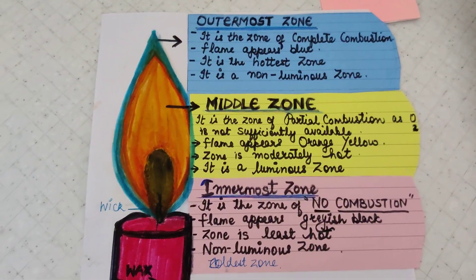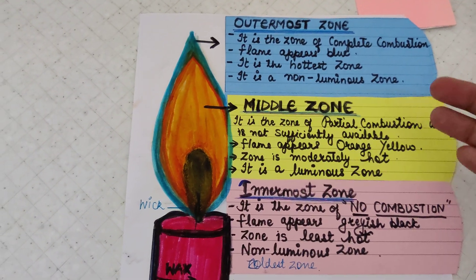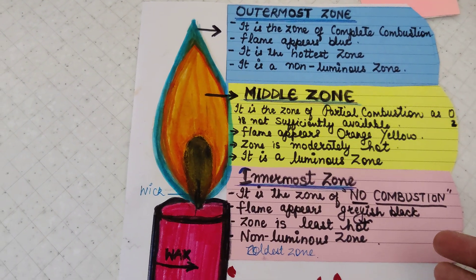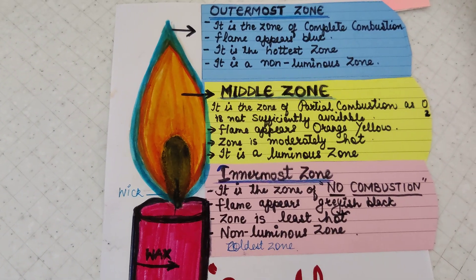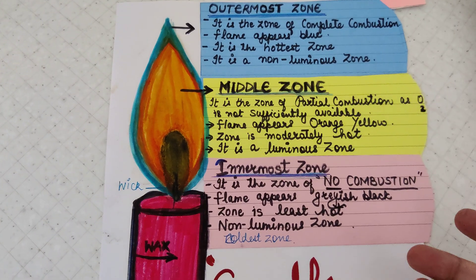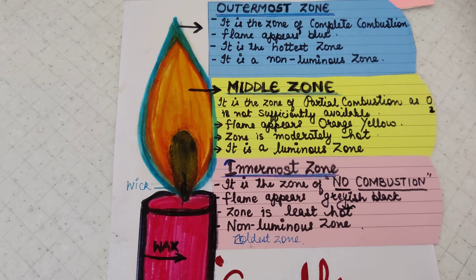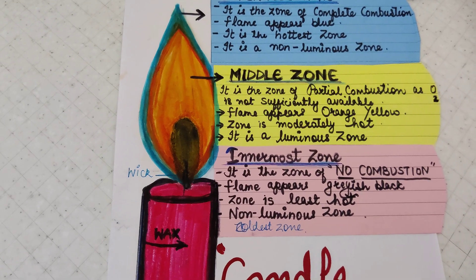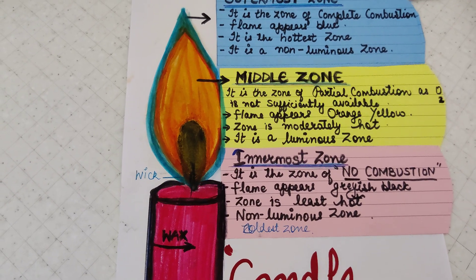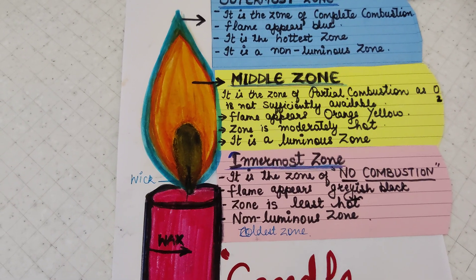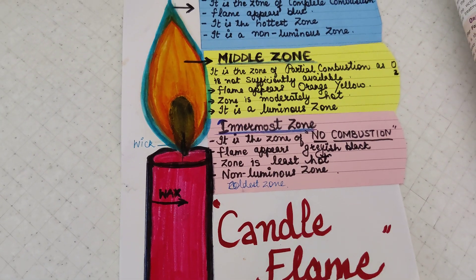This can be asked in exams: which zone shows complete combustion? You can write answers in tabular form and label the candle diagram. In MCQs, common questions include: name the zone that shows no combustion - innermost zone; what color does it show - grayish black; is it hot or cold - cold; is it luminous - no, non-luminous. That is basically the candle flame.